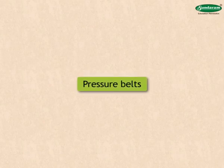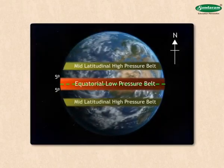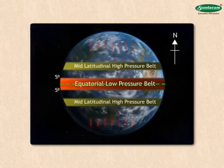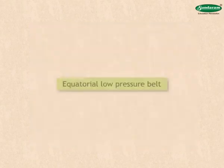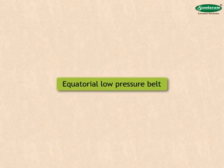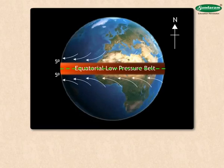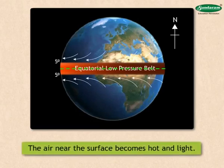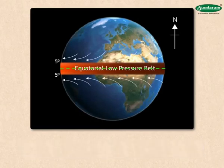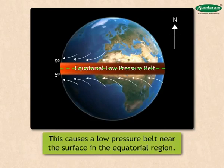Let us study the pressure belts. In the previous lesson, we have learnt how temperature zones are formed on the surface of the earth. Similarly, pressure belts are also formed from the equator to the poles. Equatorial low pressure belt. This belt extends from the equator up to 5 degrees north and 5 degrees south latitudes. In this area, rays of the sun fall mostly perpendicular. The air near the surface becomes hot and light. As a result, it rises upwards. This causes a low pressure belt near the surface in the equatorial region.